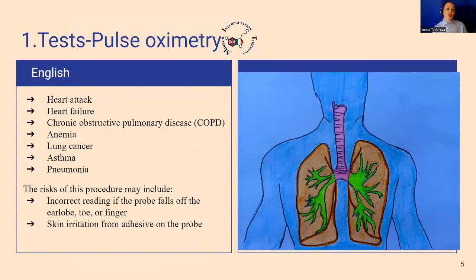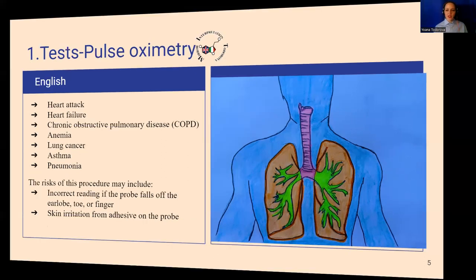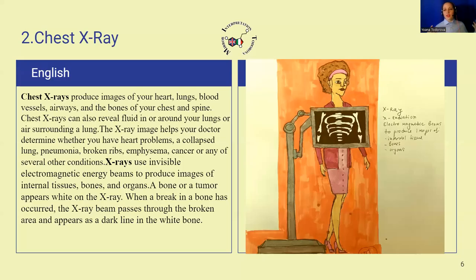We use pulse oximetry to measure conditions such as heart attack, heart failure, chronic obstructive pulmonary disease, anemia, lung cancer, asthma, and pneumonia. The risks associated with pulse oximetry are incorrect reading or skin irritation.